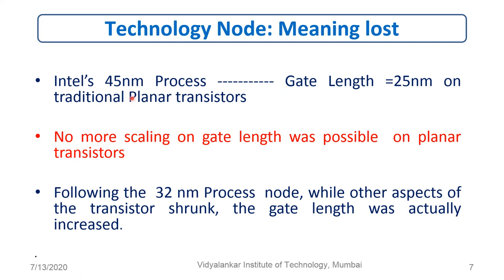When Intel was at the 45 nanometer process, the transistor gate length was 25 nanometers, applicable to traditional planar transistors. Thereafter, no more scaling of gate length was possible because of device performance degradation. Following the 32 nanometer process node, while other aspects of the transistor shrank, the gate length was actually increased. With the introduction of FinFET by Intel in their 22 nanometer process, transistor density continued to increase while the gate length remained more or less constant.